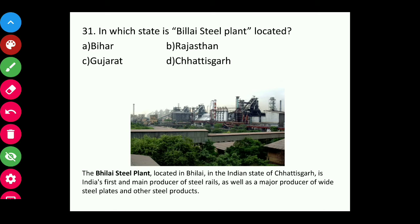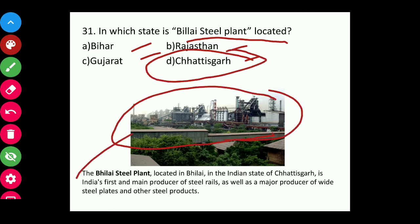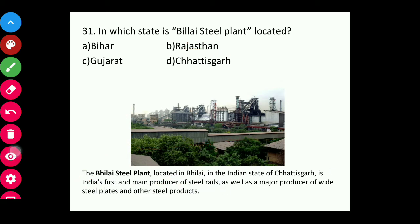Question thirty-one: In which state is the Bhilai Steel Plant located — Bihar, Rajasthan, Gujarat, or Chhattisgarh? The answer is Chhattisgarh. The Bhilai Steel Plant, located in Bhilai, is India's first and main producer of steel rails, as well as a major producer of wide steel plates and other steel products.